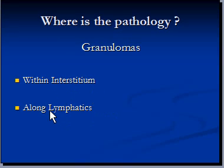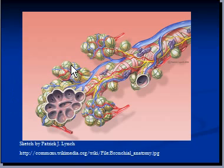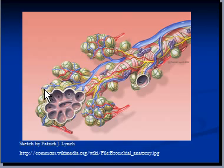The question is: what is the interstitium and what are lymphatics? Interstitium refers to a region between alveolar walls which has tiny blood vessels passing through it. By definition, no component of the alveolar wall or capillary wall is part of the interstitium. It is rather a space with interstitial fluid within it.